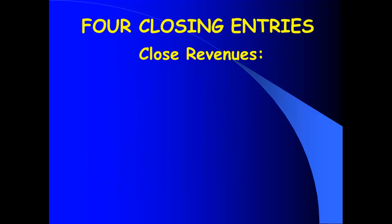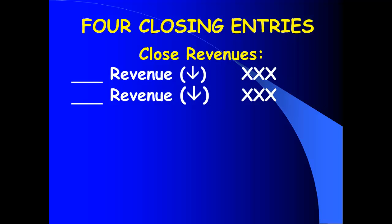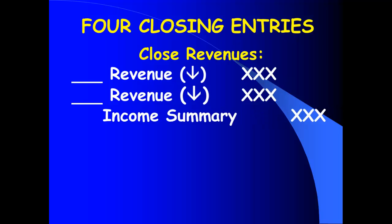The first closing entry closes out revenues. Revenues have a credit balance to begin with, so to close a revenue out and get it down to zero balance, you use a debit. We're going to debit each revenue account individually — it could be fees earned, interest earned, rent revenue, whatever. Then we're going to credit this new account called Income Summary for the total. Debit each revenue individually, credit Income Summary for the total.